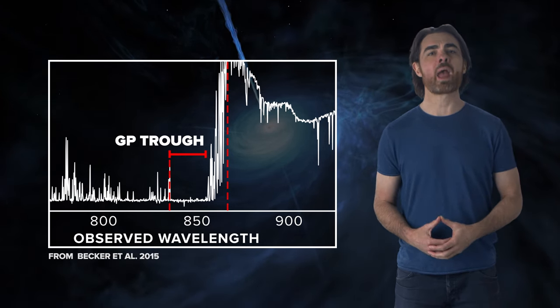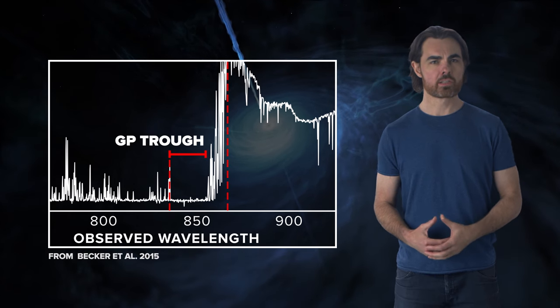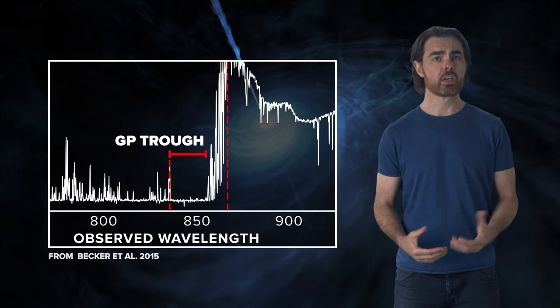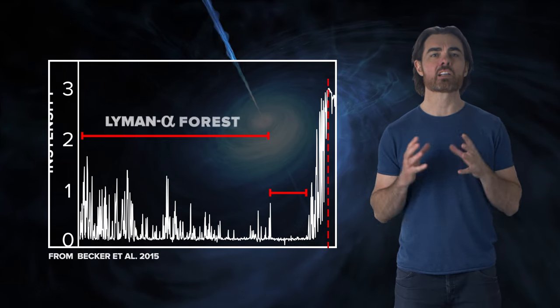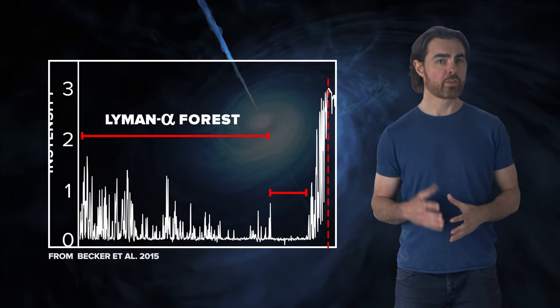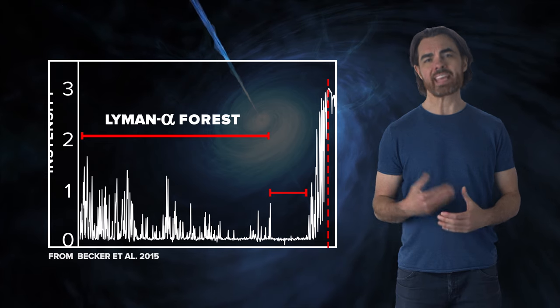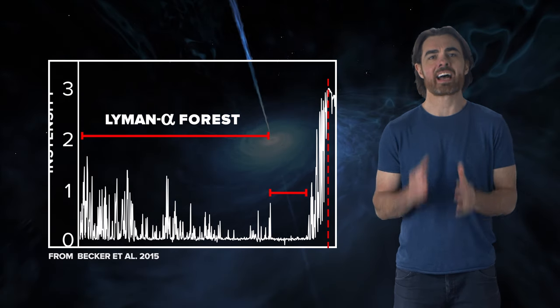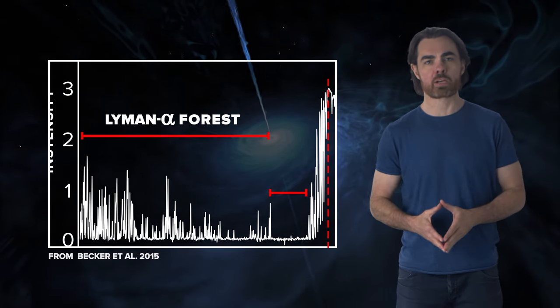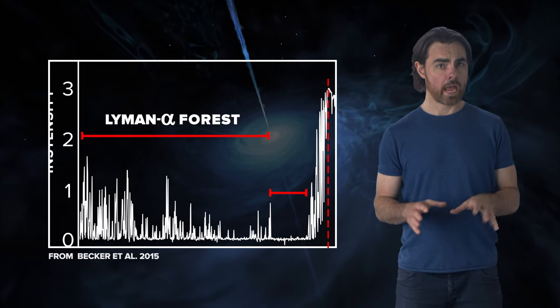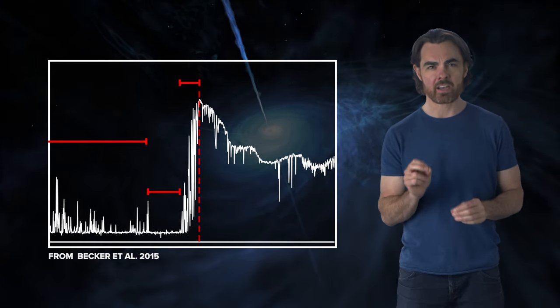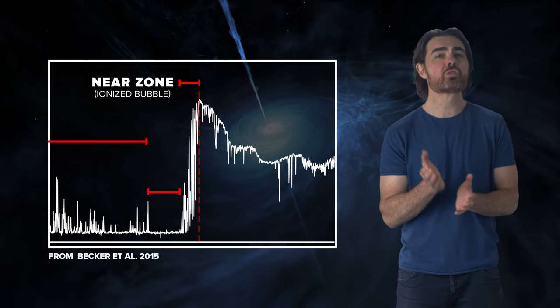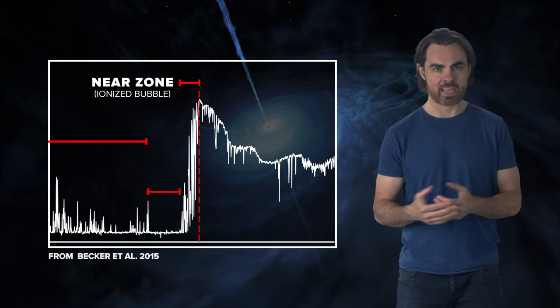This end of the trough is where reionization ended, so that photons to the left of it could potentially reach us. The jagged region is the Lyman alpha forest, where the quasar light passed through individual clouds of neutral gas, each of which cut a narrow slice out of the spectrum. And right next to the Lyman alpha cutoff, we see a little light that made it through due to the ionized bubble around the quasar itself.